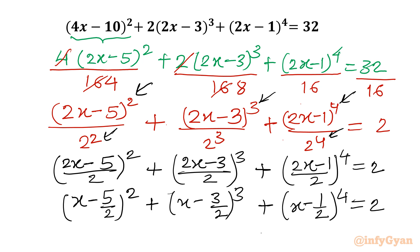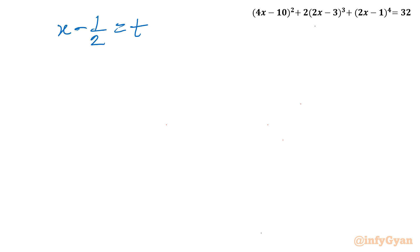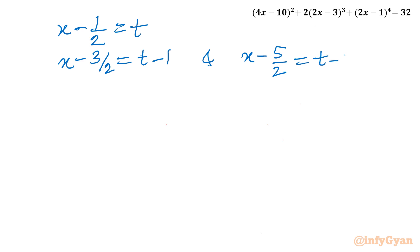This looks comparatively easier. Here the substitution is also easy. I will consider the highest power term as our substitution, so I will let t = x - 1/2. Then x - 3/2 becomes t - 1, and x - 5/2 becomes t - 2. So our equation will convert into the variable t.